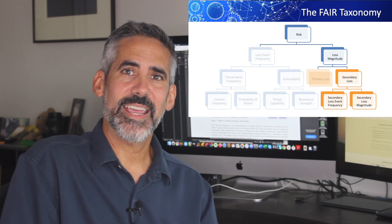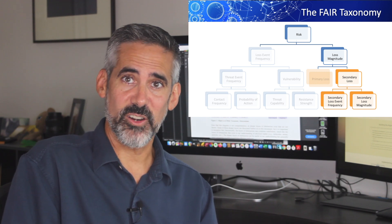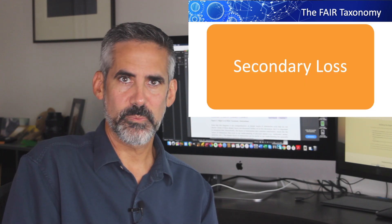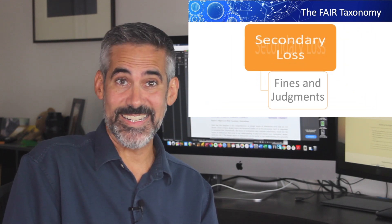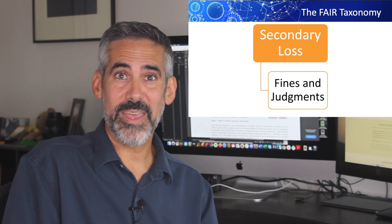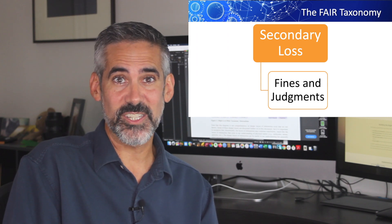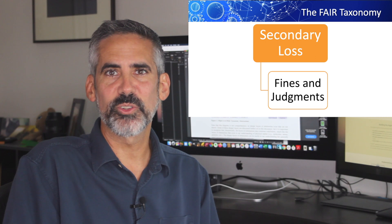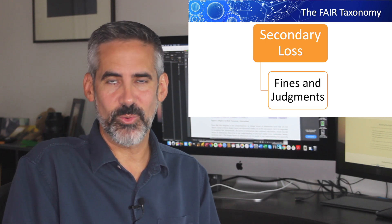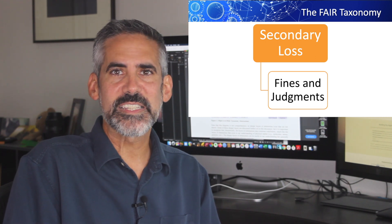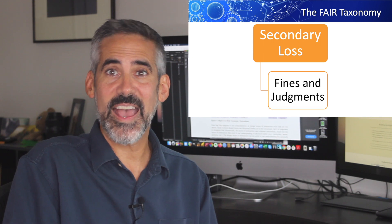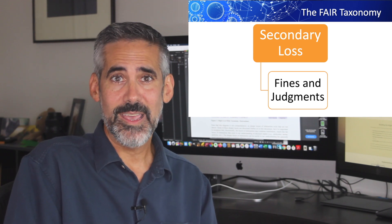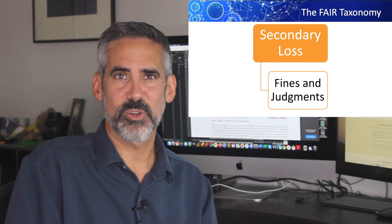Once we've determined a secondary loss has some likelihood of occurring, we break it down across the other forms of loss. We start with fines and judgments, where a loss event may either run us afoul of regulators — such as a breach of patient data — or other stakeholders, such as in a breach of contract situation. If we're hosting a SaaS application and promising five nines of uptime, a significant availability event may have us compensating our customers in some way.